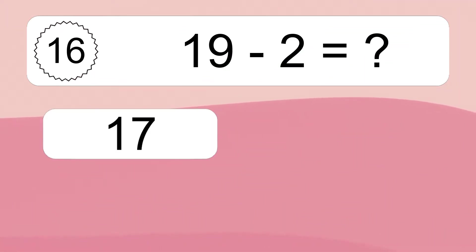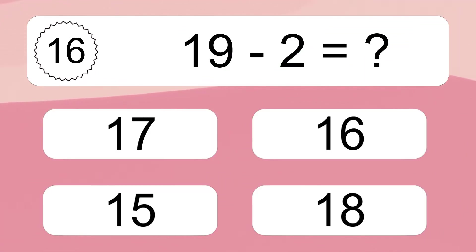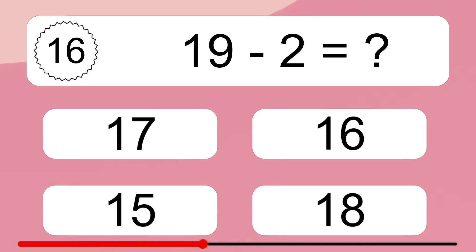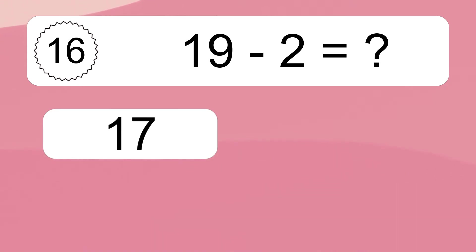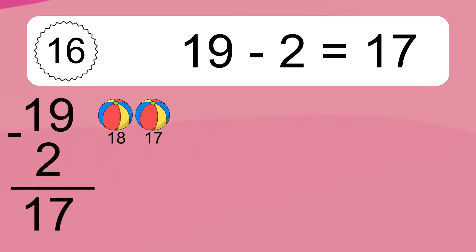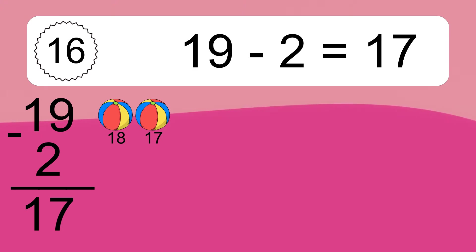19 minus 2 equals what? 19 minus 2 equals 17. Let's count it: 18, 17.